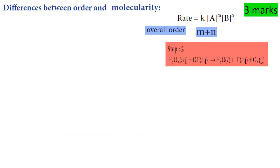The difference between order and molecularity. The order of a reaction: the rate expression involves the power of the concentration terms. The sum of the powers of the concentration terms in the rate law gives the order.